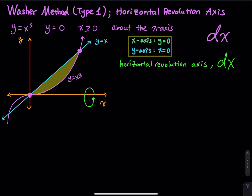Let's take a look at this Washer's method problem. This is a type one — type one is horizontal revolution axis. So when the revolution axis is horizontal, the integral is a dx integral. We have a couple of curves: y equals x to the third, y equals zero, and x greater than or equal to zero. The straight line is y equals x, the curve is y equals x to the third, and the revolution axis is the x-axis. Since the x-axis is horizontal, the entire integral is a dx integral.